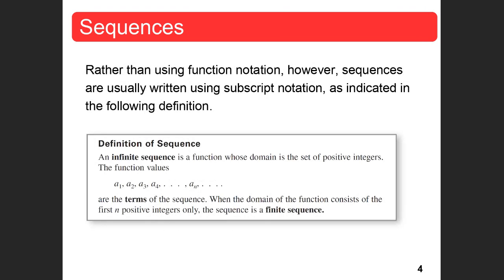Rather than using function notation, sequences are usually written using subscript notation as indicated in the following definition. An infinite sequence is a function whose domain is a set of positive integers. The function values a sub 1, a sub 2, a sub 3, a sub 4, a sub n are the terms of the sequence. When the domain consists of the first n positive integers only, the sequence is a finite sequence. Infinite means it goes on forever; finite means it has a specific number of terms.